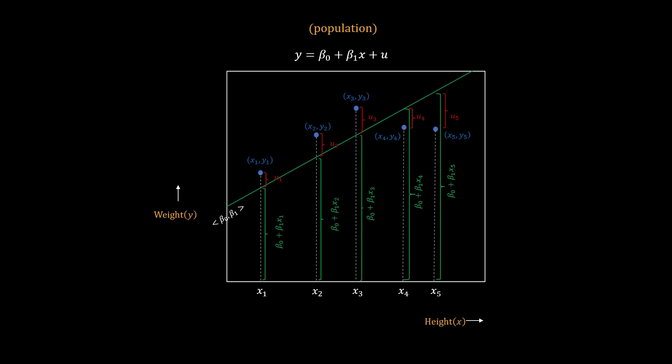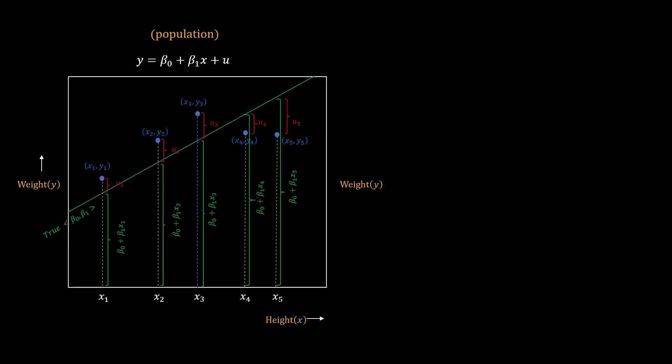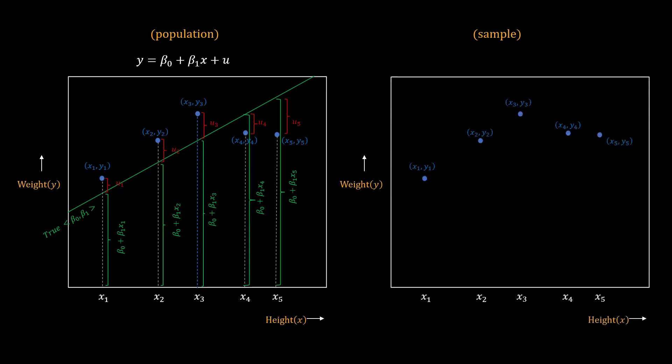Note that in our case, the error term is negative for the fourth and fifth observation. Here is a very important concept. While all of this is happening in the population, we don't see everything in the sample. We don't know the true parameters beta 0 and beta 1, and so we don't know the true line. We don't know the error terms either. All we observe is just the x and y, and we have to estimate everything else.